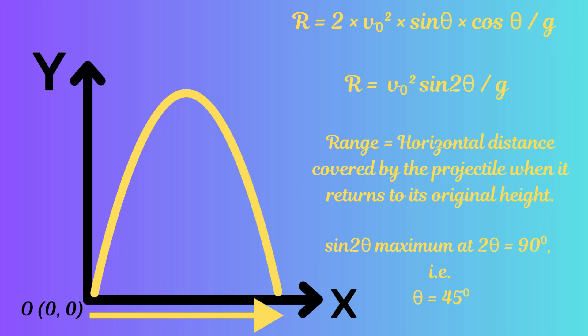Using the information we already have, we can also calculate the range of the projectile. By range we mean the horizontal distance the projectile covers when it returns to its initial launch height. Eliminating time t from the equations, we get the range in terms of the initial velocity v₀, gravitational acceleration g, and the launch angle theta. Take a close look at the expression for range on screen.